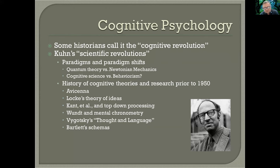Let's talk about the foundational parts of cognitive psychology and the context of where it came from. It's very popular to look at cognitive psychology, which kind of became a thing in the 1950s. A lot of psychology historians like to refer to this decade as the era of the cognitive revolution — an interesting term that gives the impression of cognitive psychologists storming the psychology buildings and kicking out the behaviorists.